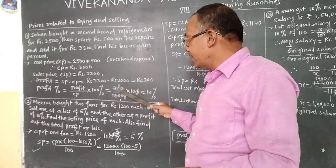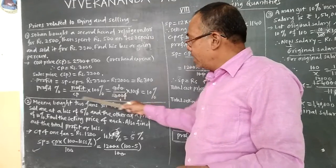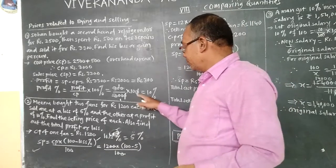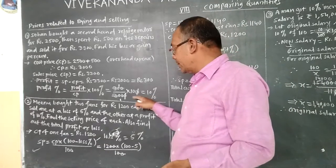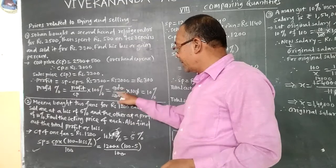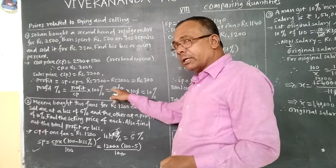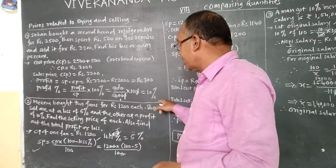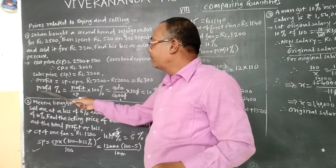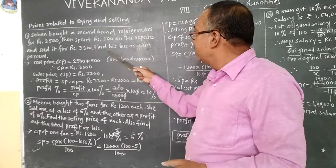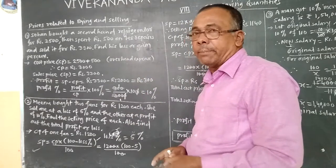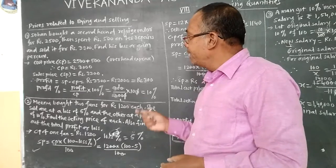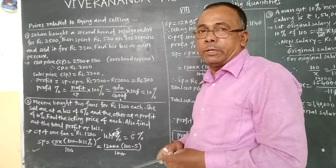Here profit is 300, divided by cost price 3000, into 100. We can cancel one zero of 100 with one zero of 3000, giving us 300 upon 300, and those cancel too. So we get 10. Therefore 10 percent is the profit percent in this example. I think you have got the idea of finding the profit percent.